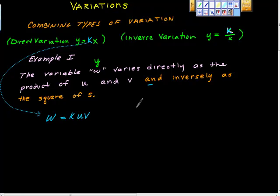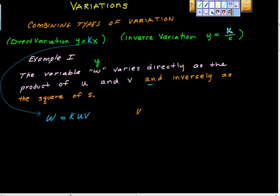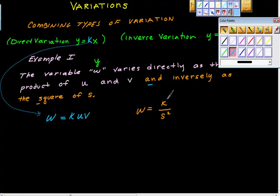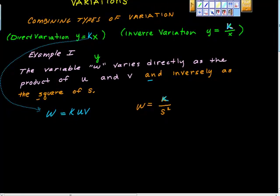Now we need the general form of the second part. We have an inverse variation. w has an inverse proportionality to the square of s, so that would be k over s squared. I'd like to remind us again that this k and this k are the same one. Now I'm going to combine these two.